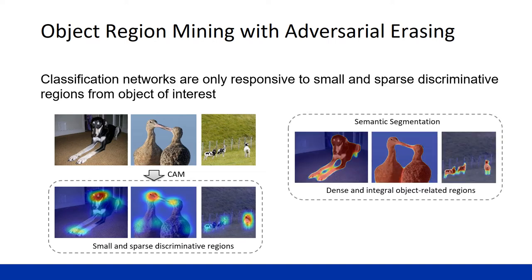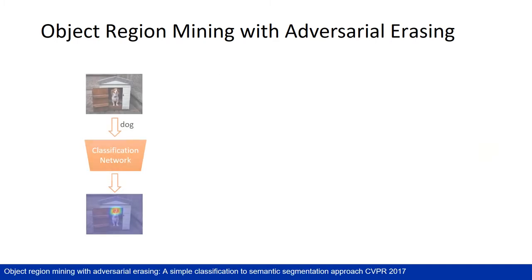However, semantic segmentation requires dense object coverage for separation. To extend object regions, we propose a very simple solution called adversary-erasing. We first train a classification network with original images, and the CAM method is employed to localize the discriminating region. Then,